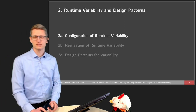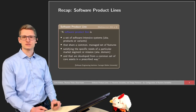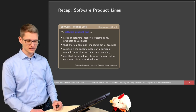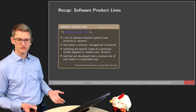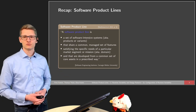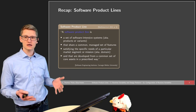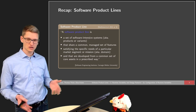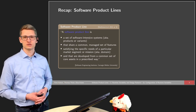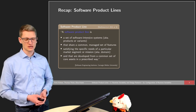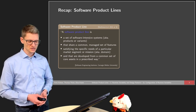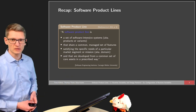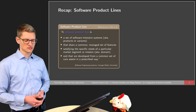Let's start with the first part and a short recap. A software product line is a set of software-intensive systems — we also call them products or variants — which share a common managed set of features. They are typically in a domain, and today we are going to talk about the domain of graphs and graph theory.